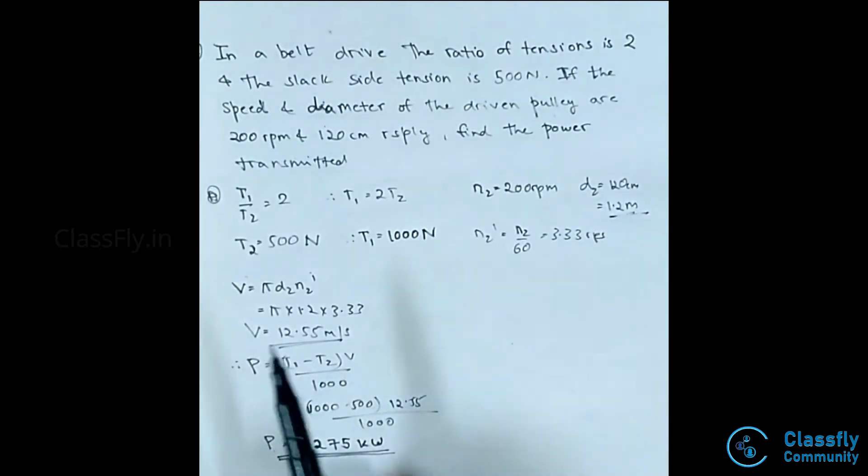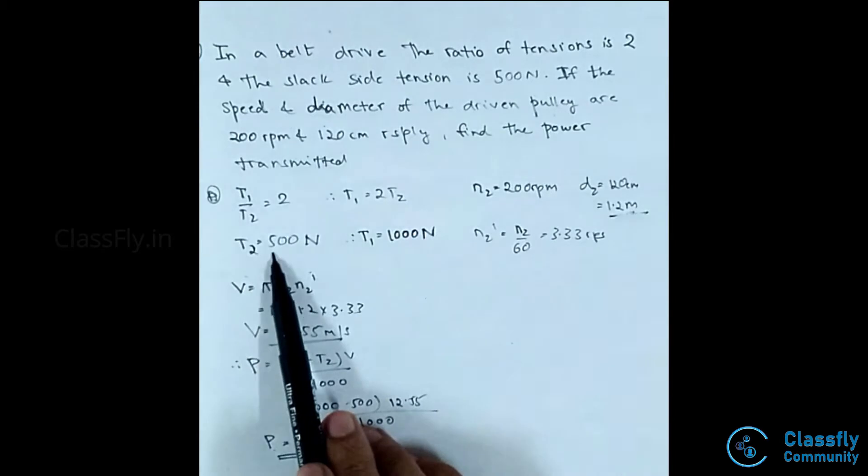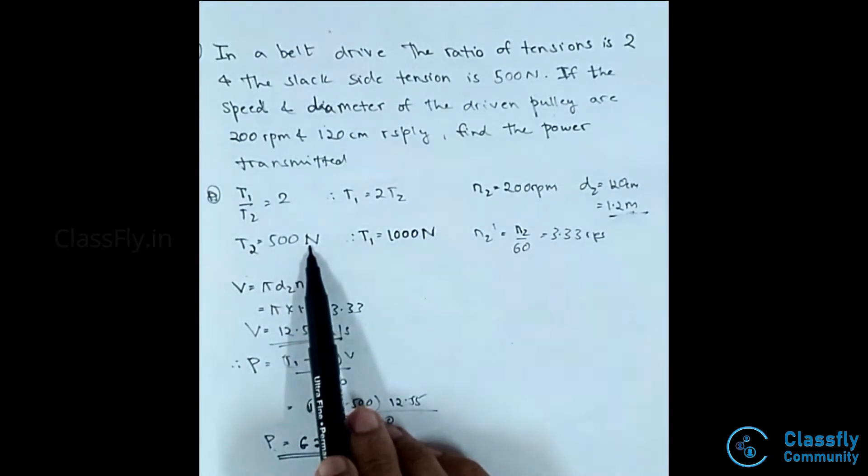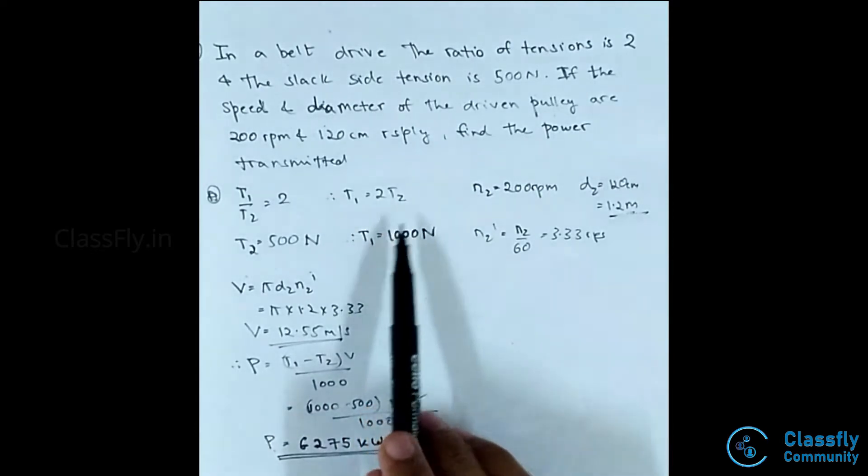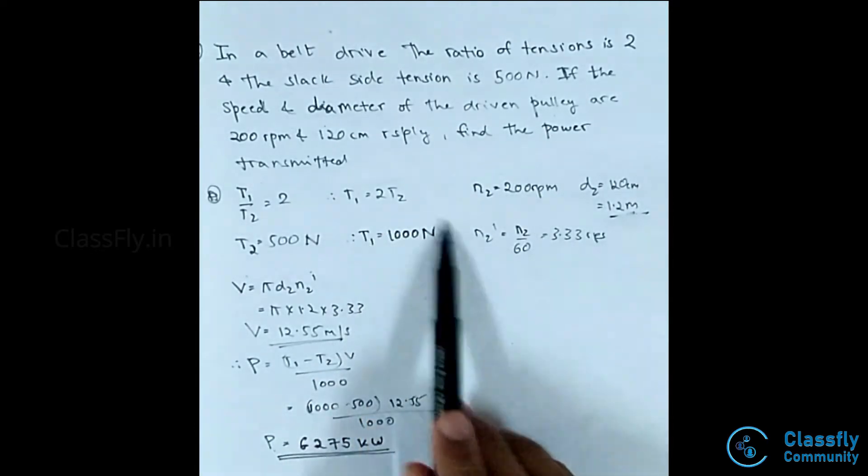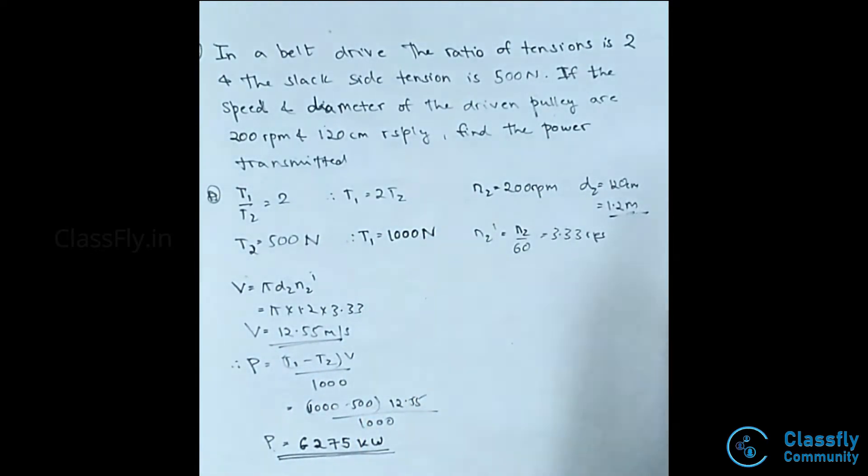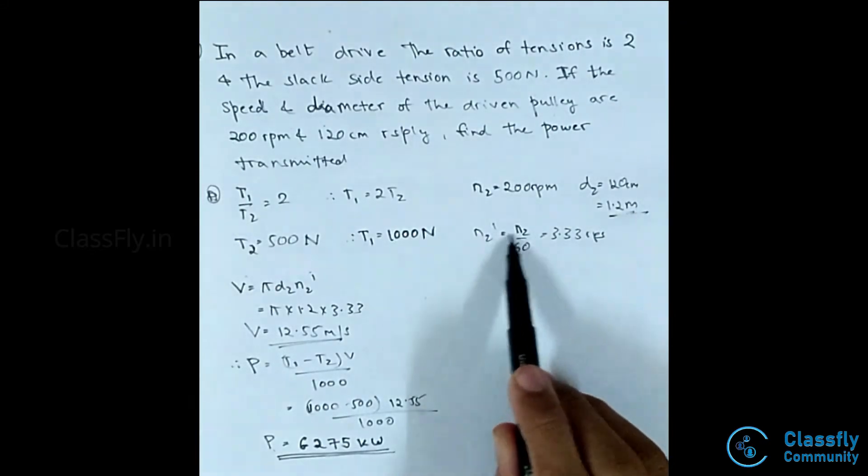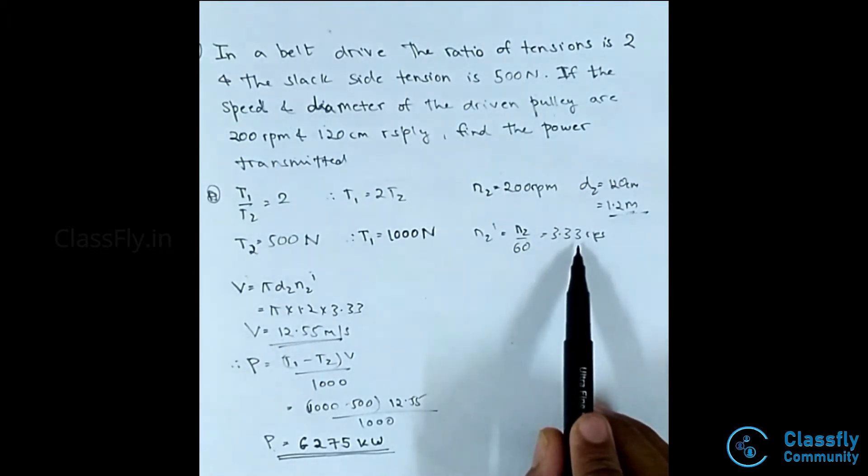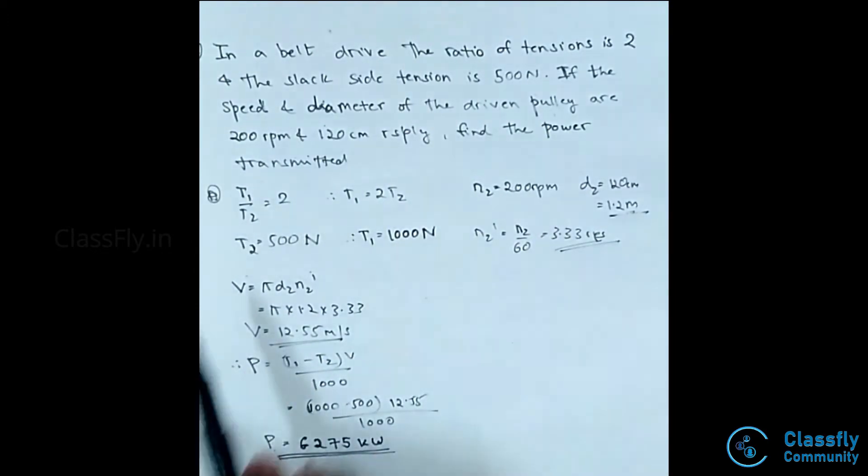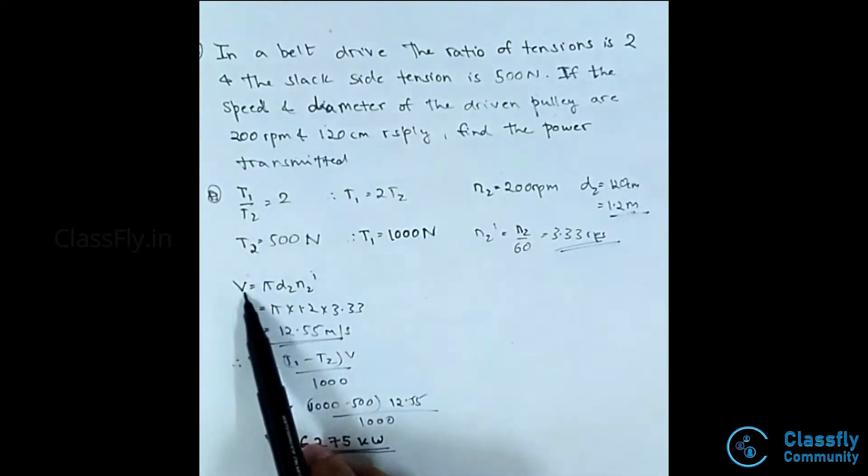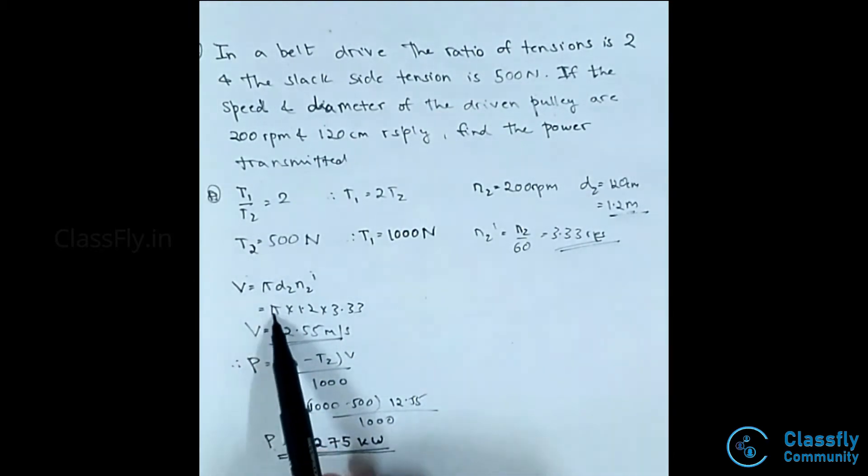Now, tension T2 is given as 500 newtons. From this we know that T1 is 2 times T2, so T1 equals 1000 newtons. N2 dash is N2 divided by 60, which equals 3.33 revolutions per second.